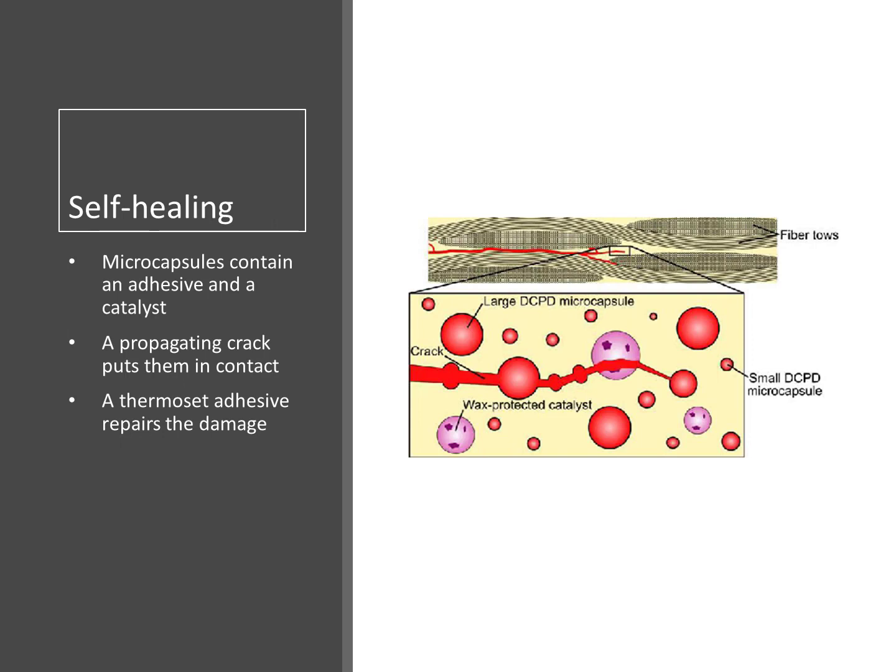Self-healing is a biomimetic functionality — biomimetic means that the material is engineered to imitate a biological organism. In this case, when the material is damaged in the form of cracks, the crack breaks microcapsules containing an adhesive. The crack also breaks other capsules containing a catalyst. The adhesive travels through the cracks, eventually reaching the catalyst. When both meet, the adhesive hardens, thus repairing the crack.